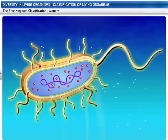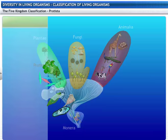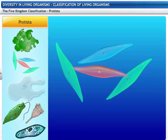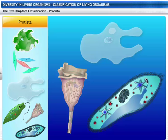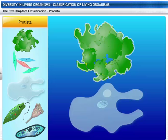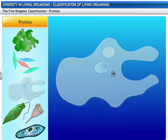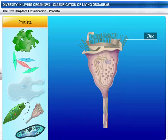Members of the kingdom Protista are algae, diatoms, and protozoans. Protists include plant-like and animal-like organisms. Their mode of nutrition can be autotrophic or heterotrophic. They are unicellular and the simplest form of eukaryotes. Some protists move with whip-like flagella, hair-like cilia, or finger-like pseudopodia.